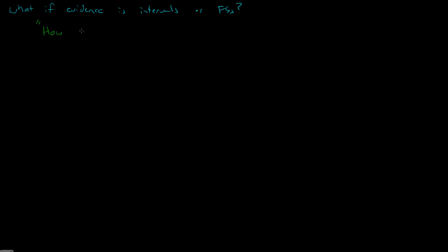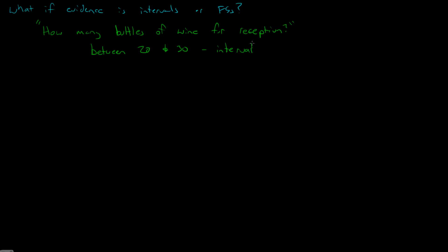For example, what if we had the question: how many bottles of wine should we purchase for the reception? You ask this question to a bunch of your friends and they give you answers like 'between 20 and 30' — that's an interval. How do you aggregate a bunch of intervals together? One person says between 20 and 30, another says between 10 and 15, another says 18 to 23. Or what if somebody says 'about 25'? That's probably a fuzzy number with a triangular shape around 25.